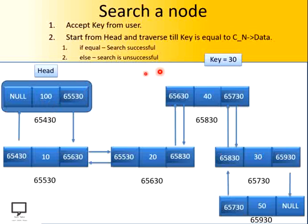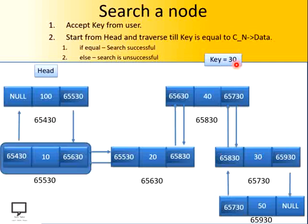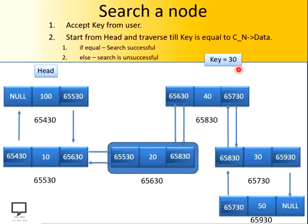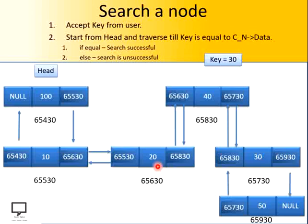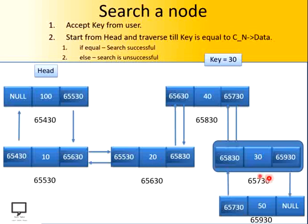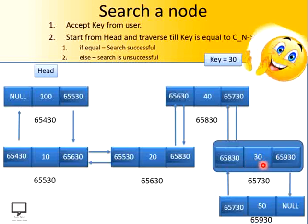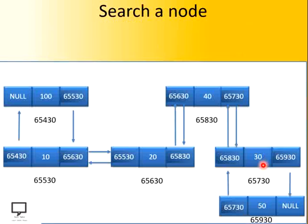Let's start with the head node. Is its data part 100 equal to key value 30? No. Let's move to the next: is 10 equal to 30? No. Let's move forward: is 20 equal to 30? No. Let's move forward: 40 is also not equal. Now at this position, the data part of the node is equal to the key value 30, so we can say that the search is successful. We are done with a successful search.